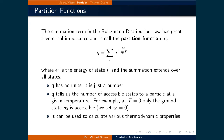The partition function tells us the number of accessible states to a particle at a given temperature. For example, at T equals zero, only the ground state n0 is accessible, and we set e0 to be equal to zero. Finally, it can be used to calculate various thermodynamic properties.